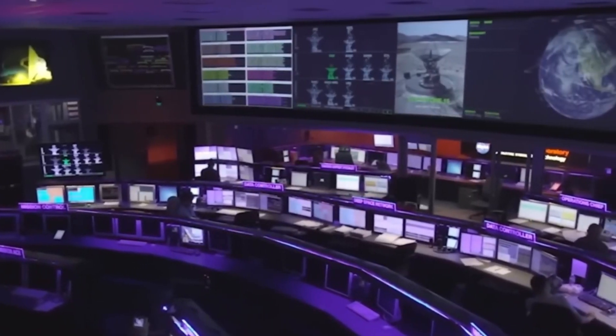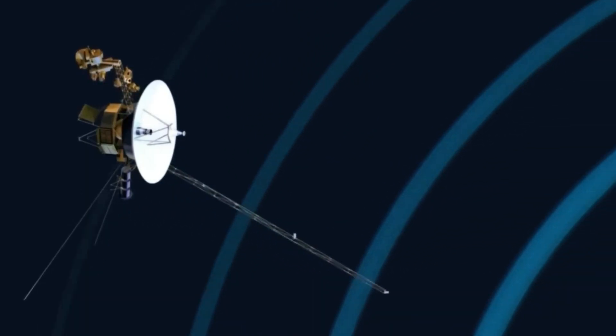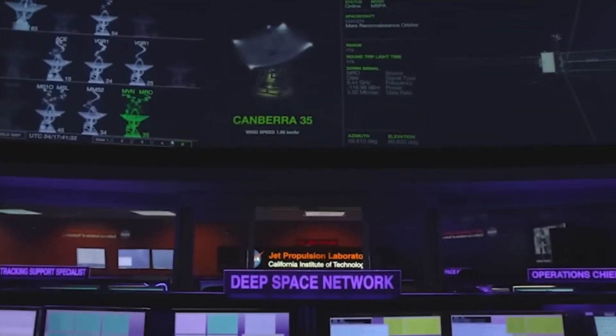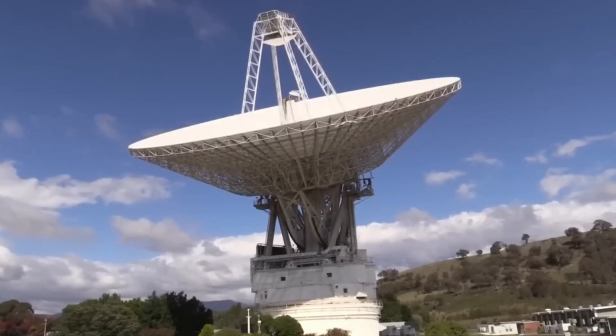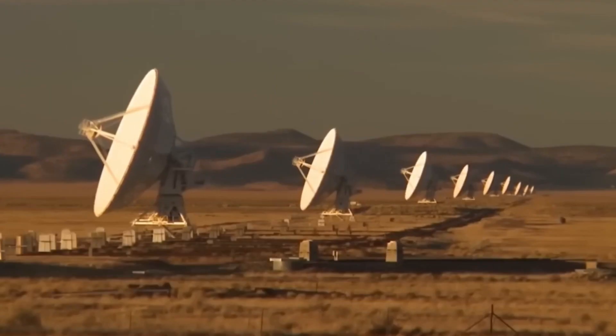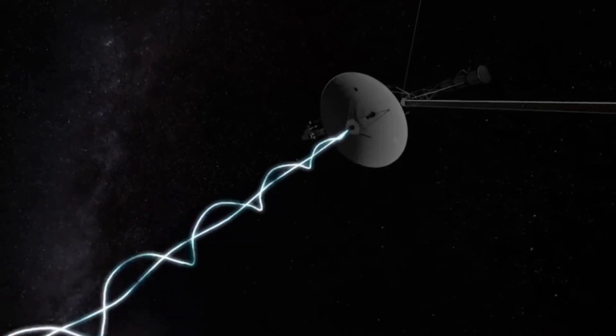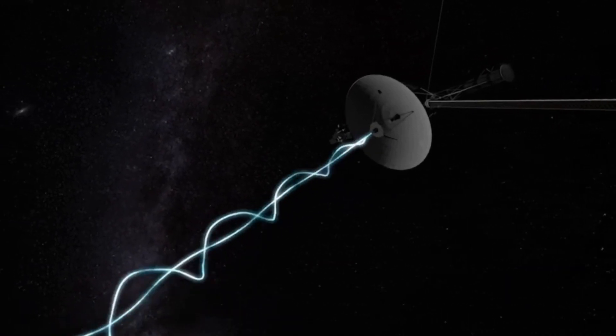The spacecraft's yearly power production is reduced by about four watts, which restricts how many systems it can run. To save energy, the mission team has shut down the apparatus. To date, no scientific apparatus has been decommissioned. NASA wants to continue using the Voyagers until 2025.